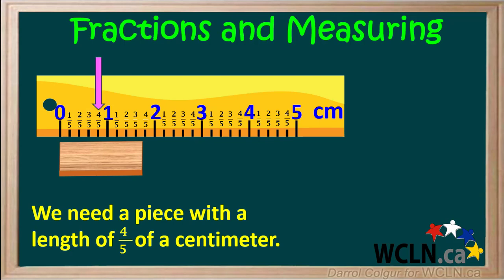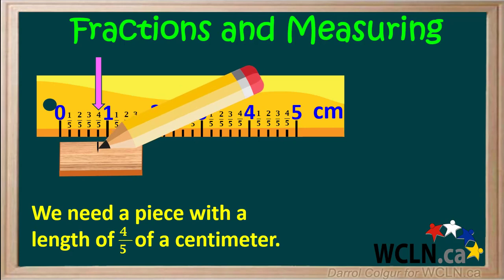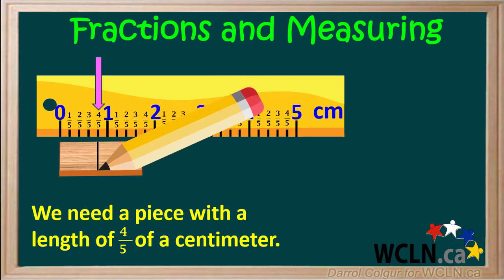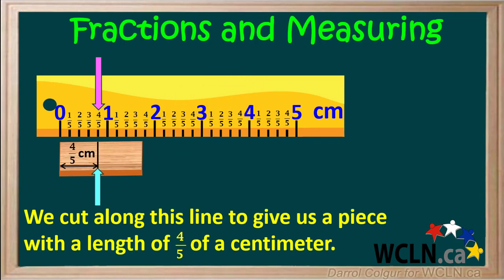The pink arrow shows where four-fifths of a centimeter is on our ruler. So we can get a pencil and draw a line on our piece of wood right at four-fifths of a centimeter. Now we just need to cut along this marked line to give us a piece of wood with a length of four-fifths of a centimeter.